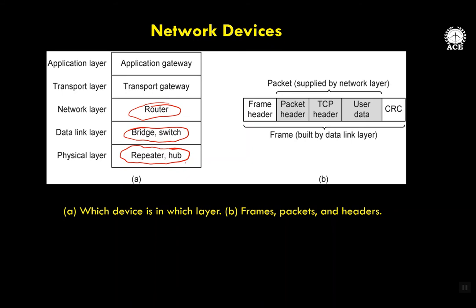In an earlier video, while discussing wireless LANs, we talked about bridges. Bridge is a device — I have shown you the physical image of the bridge in my earlier video, you can watch that again if you have not. Bridge is used for interconnection of two similar or dissimilar LANs. I showed you two types of bridges: transparent and source routing bridges.